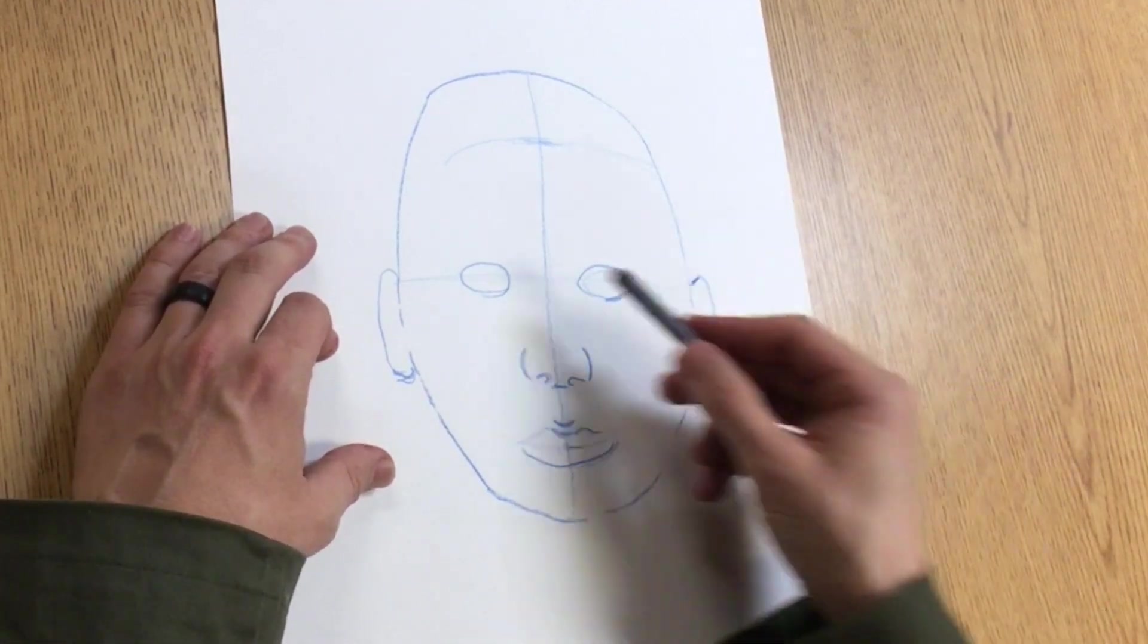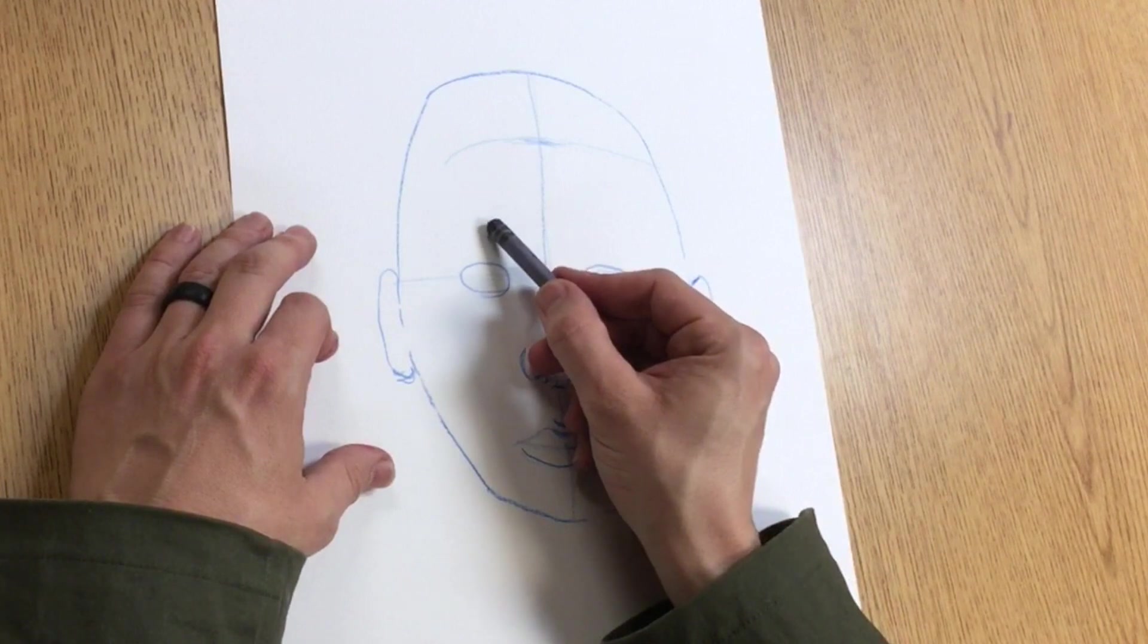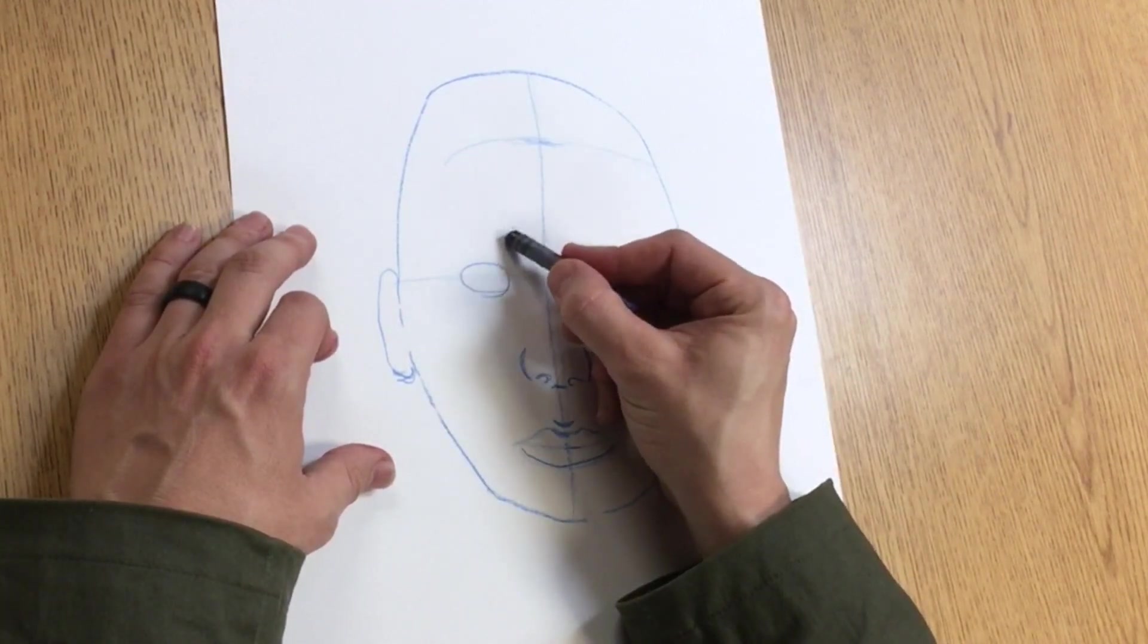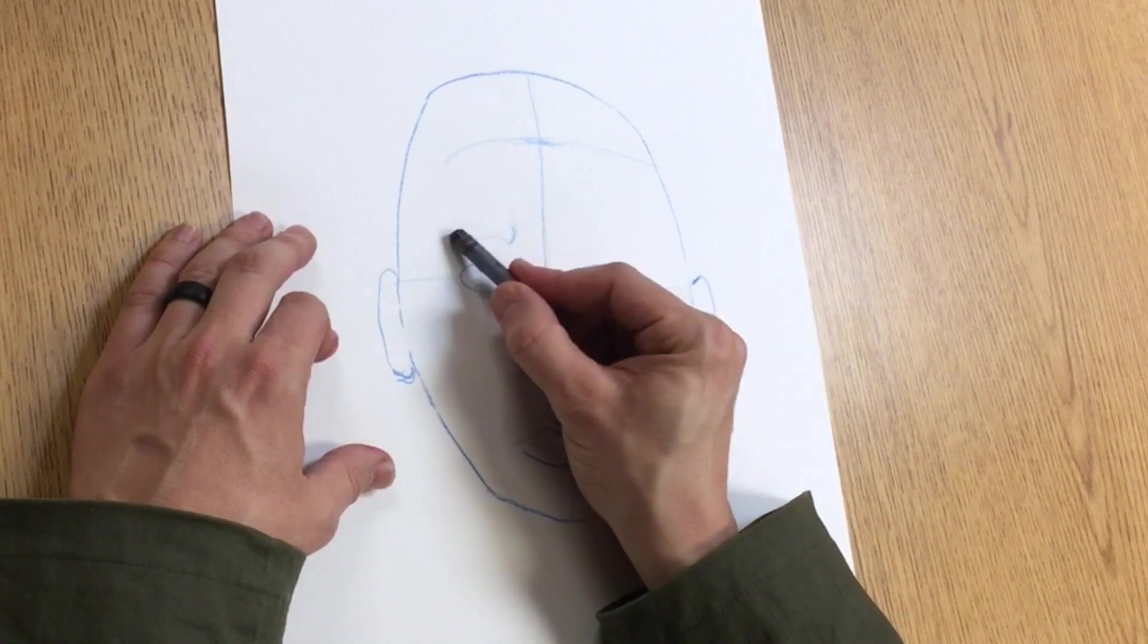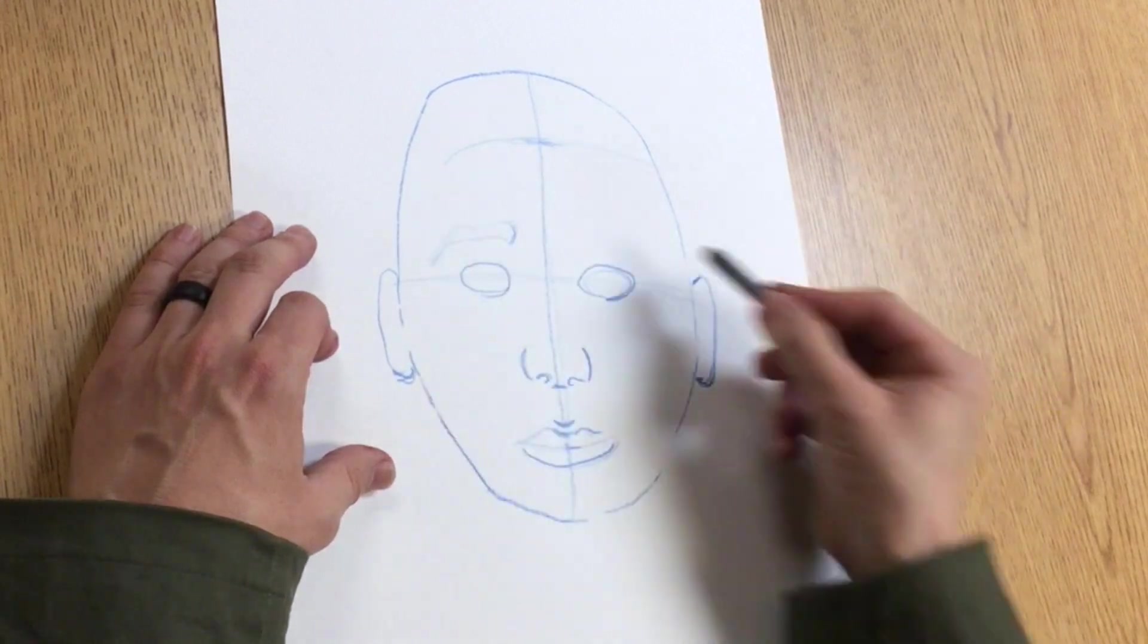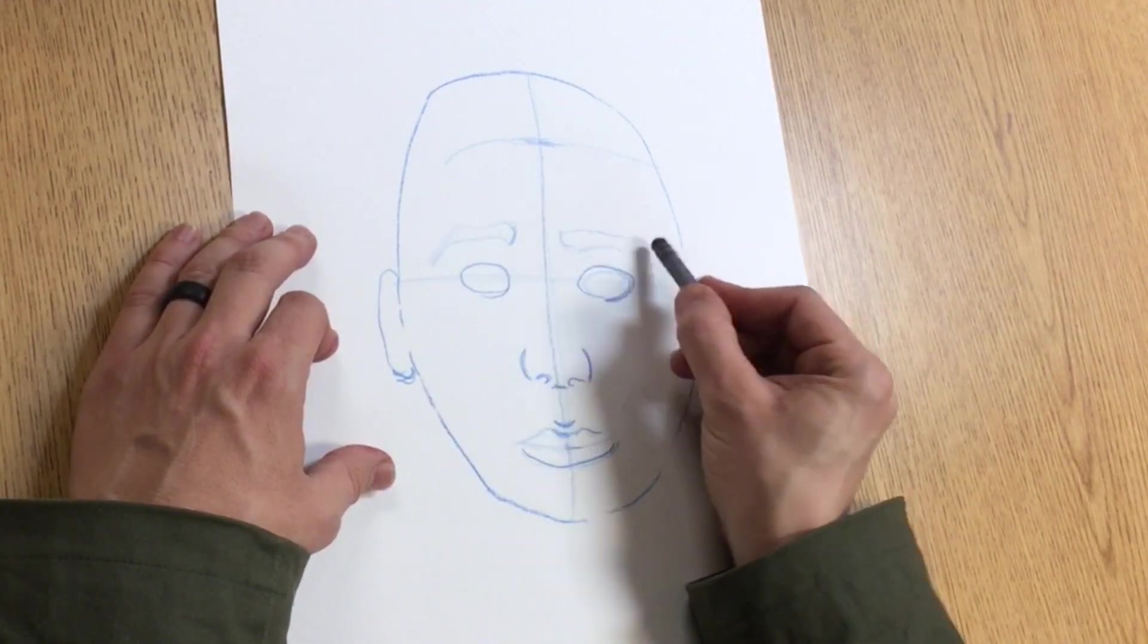If you look between your eye and your hairline, there's an eyebrow, which starts out kind of round and gets kind of pointy on the end. Everybody's eyebrows are different though, so you'll want to be looking.